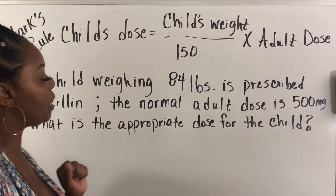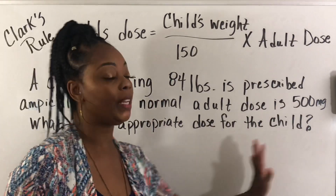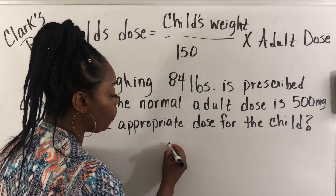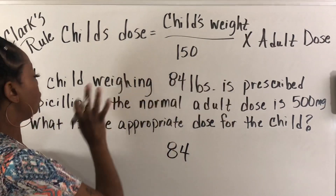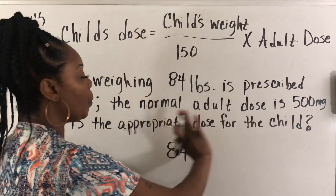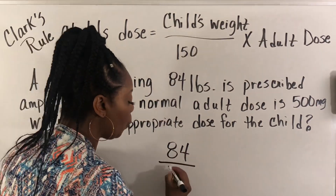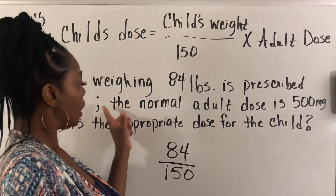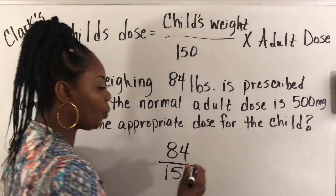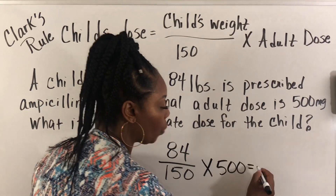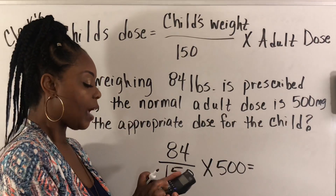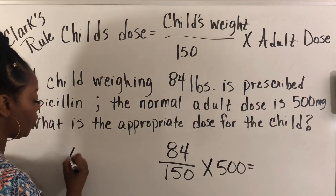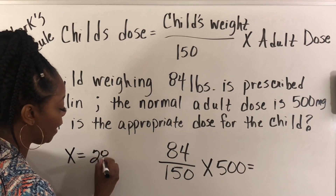A child weighing 84 pounds is prescribed ampicillin. The normal adult dose is 500 milligrams. The child's weight is 84 pounds, divide by 150, then multiply times 500 milligrams. So: 84 divided by 150 times 500. The child's dose is 280 milligrams.